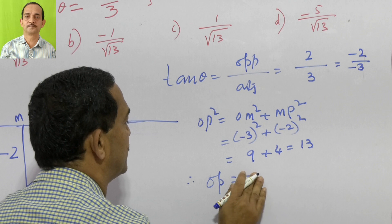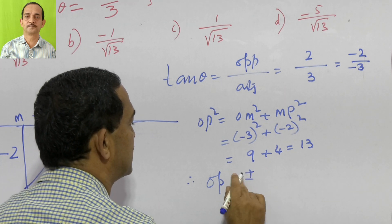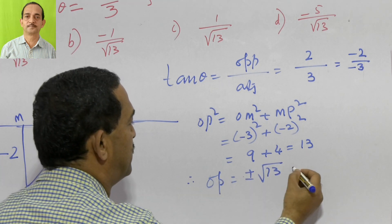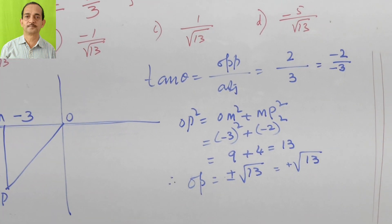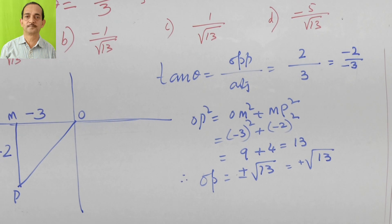Therefore, OP equals plus or minus root 13. But hypotenuse is always positive, therefore we take only plus root 13.